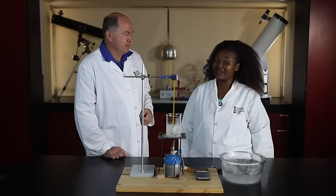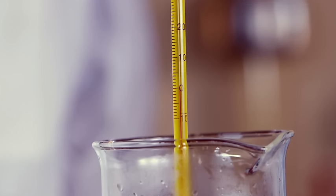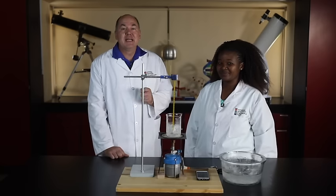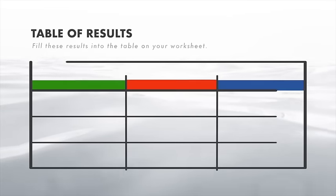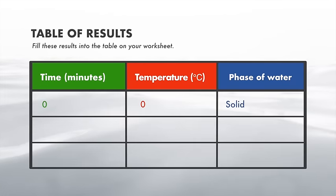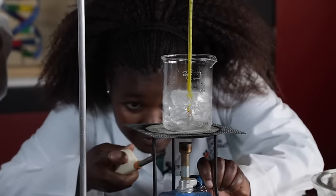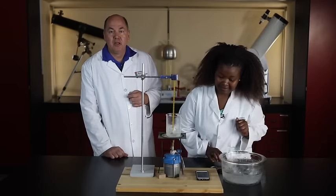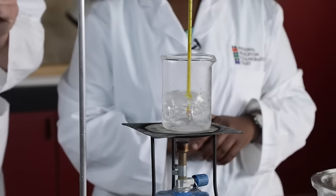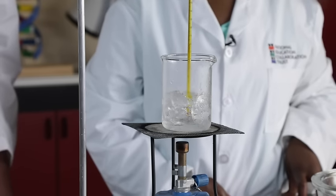The apparatus is set up and ready. We start by measuring the temperature of the crushed ice before we begin heating it. The temperature of the crushed ice is 0 degrees Celsius — this result is at time equals 0 minutes and the phase of water is solid. Fill these results into the table in your worksheet. We will help you with the first set of readings, but hereafter you need to record the results yourself. Now we begin heating the water. We set the Bunsen burner flame, place the burner under the tripod, and at the same time start the timer on the cell phone. We can see that the ice is beginning to melt.